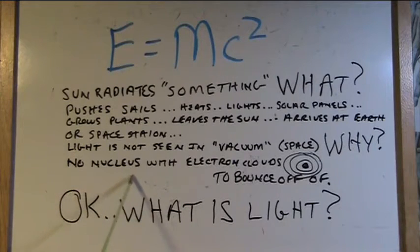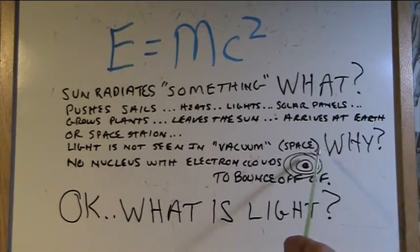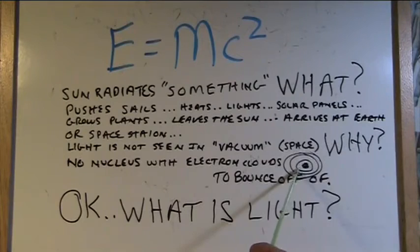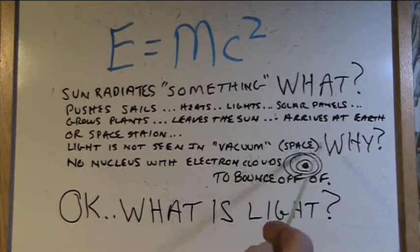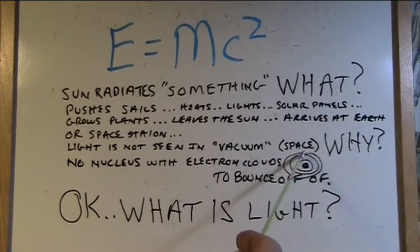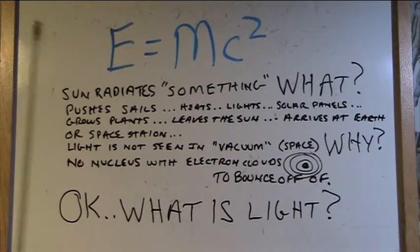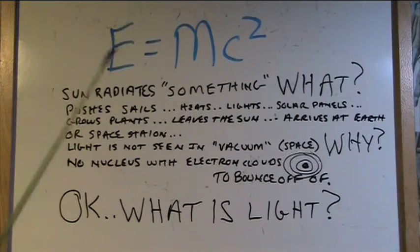The reason is no nucleus with electron clouds to bounce off of. So if light hits that, there's nothing to bounce off of. There's no complete nucleuses with electrons in space to hit whatever's hitting that. Now, Einstein says it's some kind of radiation, some kind of particle, some kind of wave. Well, I'm going to explain that in a second. And it is a particle and it is a wave, but it is not duality, it's singularity. And I will show you that in a second.